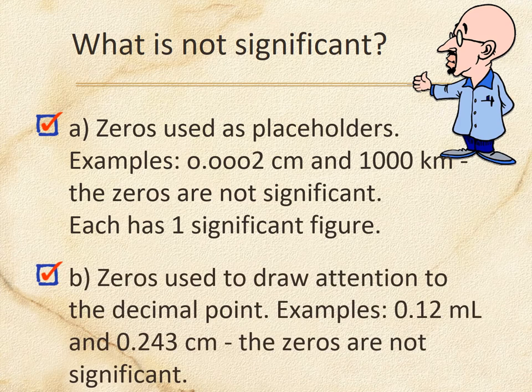Zeros before a decimal point are not significant. So 0.12 milliliters is only two sig figs — that leading zero doesn't count. It's still good practice to write a zero in front of the decimal so the decimal point doesn't get lost.